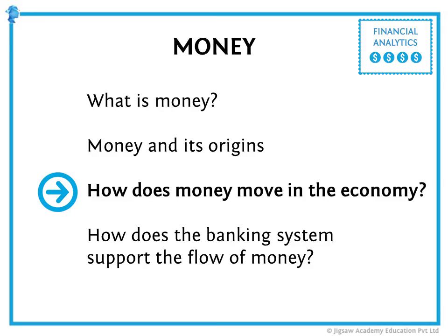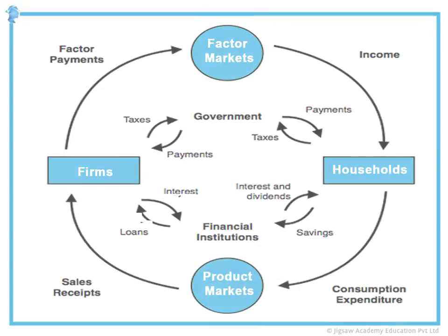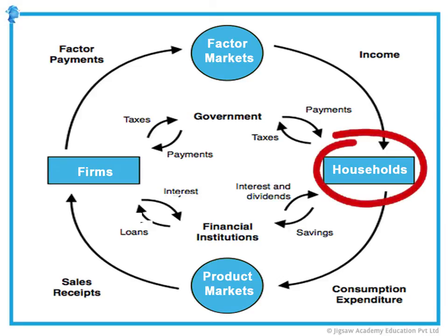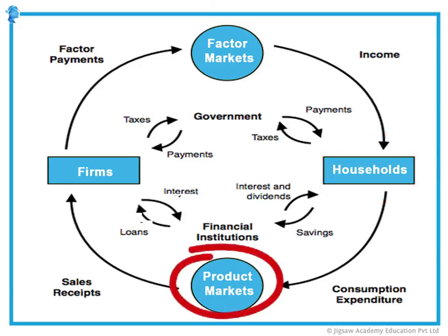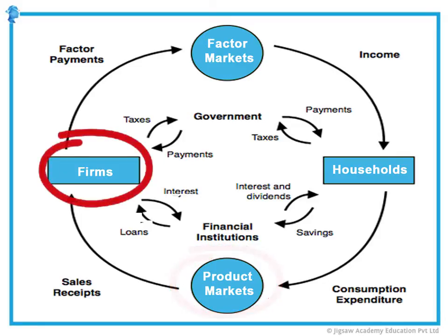So how does money move in the economy? Now that we know that money is something which has intrinsic value, let's understand something called the circular flow of money. Let's start from one part of the circle: the household — you and I. We go to the product markets to get consumption-related goods. Farms and companies actually make goods in bulk and sell them to multiple product markets.